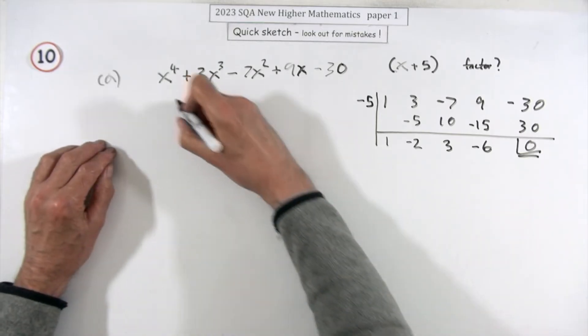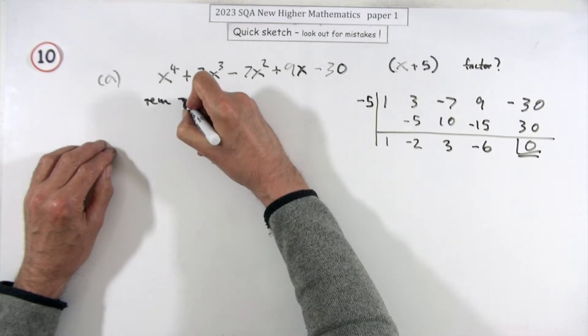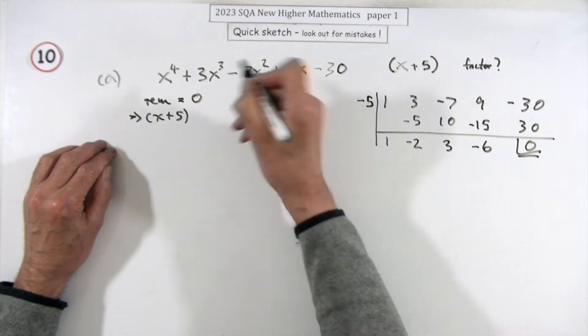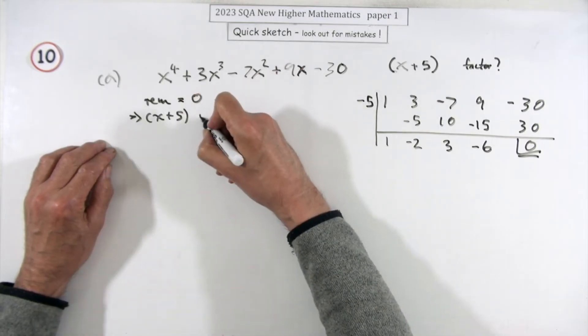Now you have to make a statement. The remainder equaled zero, which means that x plus five divided in exactly, which means that x plus five is a factor.